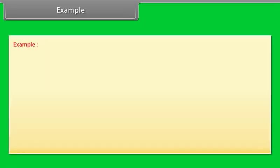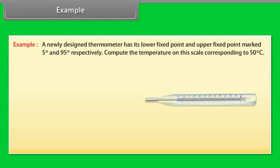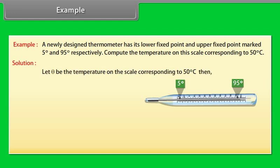Example: Let's take an example on measurement of temperature. A newly designed thermometer has its lower fixed point and upper fixed point marked 5 degrees and 95 degrees respectively. Compute the temperature on this scale corresponding to 50 degrees Celsius. Let theta be the temperature on the scale corresponding to 50 degrees Celsius. Then (theta − 5)/(95 − 5) is equal to C/100.